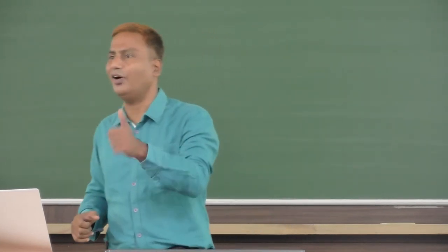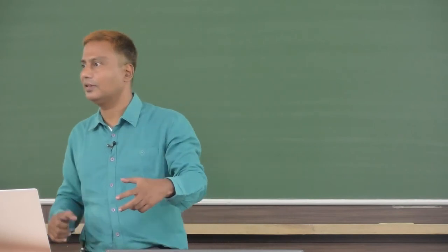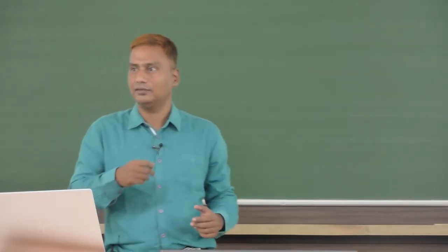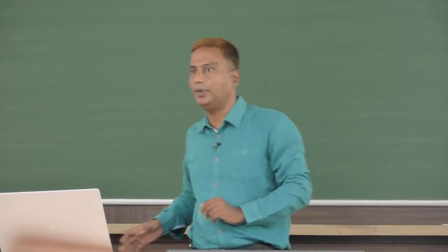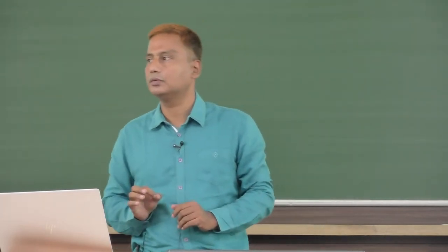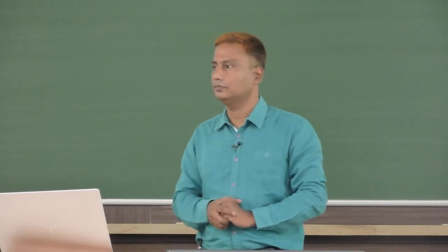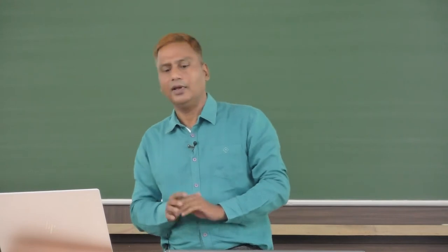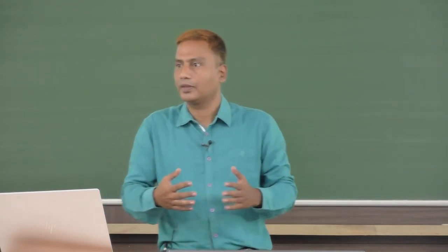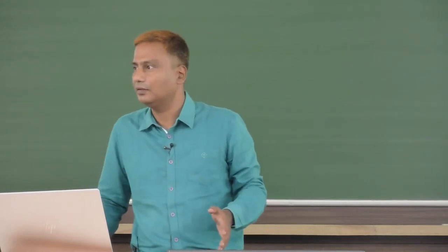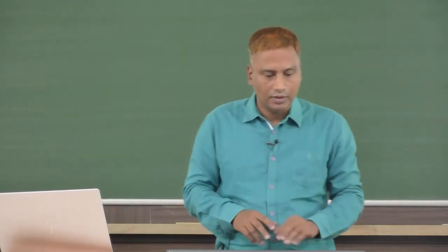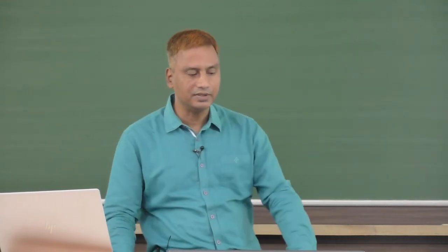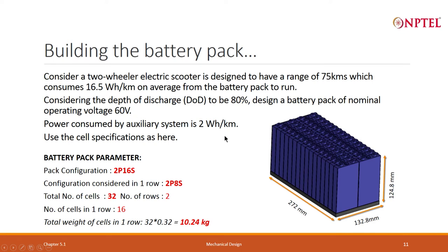There are auxiliary systems — horn, light. The new requirement in two-wheelers is that headlights must always be on, so there is always a light source. Brakes and auxiliaries consume 2 watt-hour per kilometer. Generally it is irrespective of distance, but when looking at range we need to convert all energy into watt-hour per kilometer. So our total energy consumption is 16.5 plus 2, which is approximately 18.5 watt-hour per kilometer.